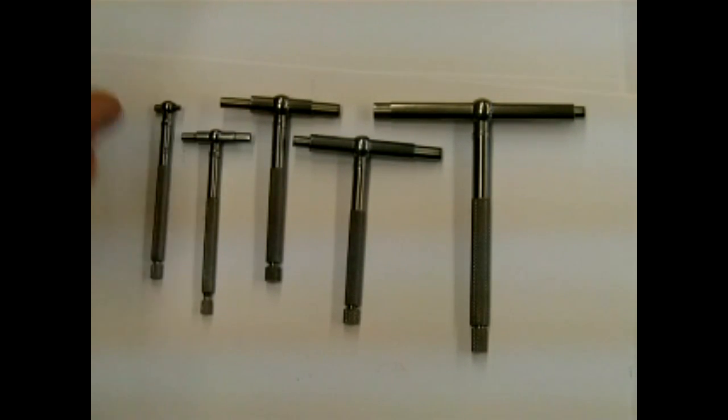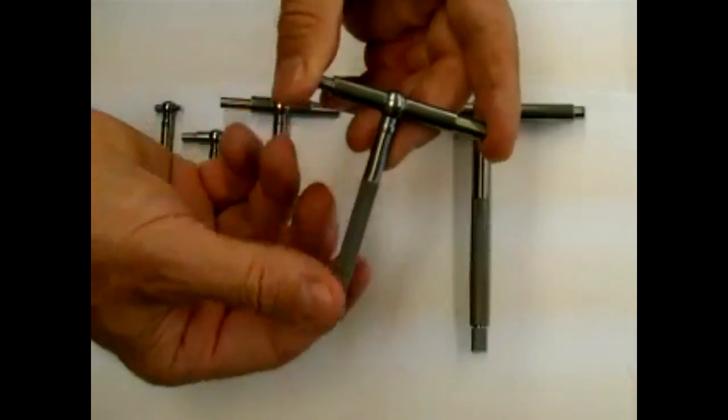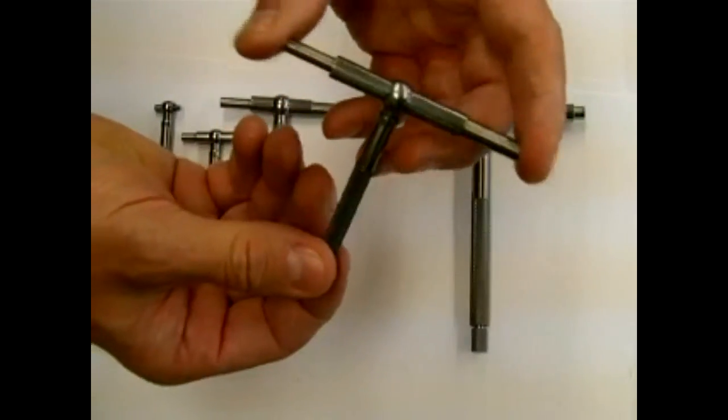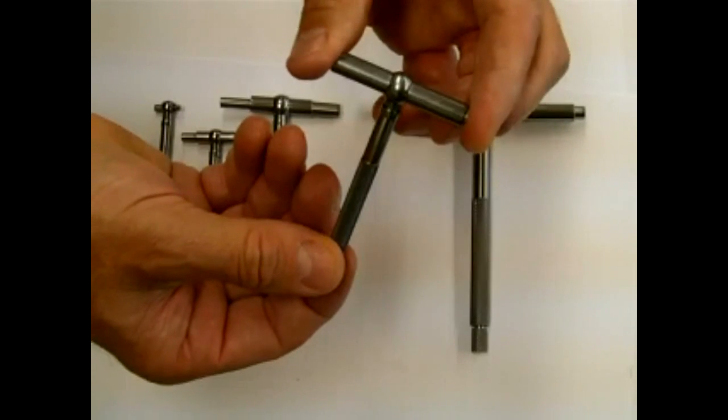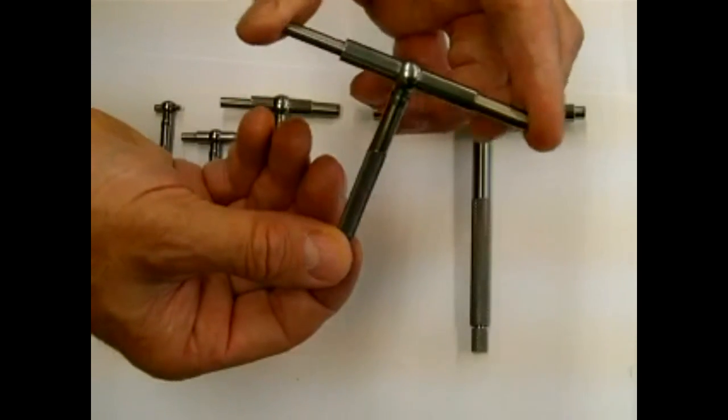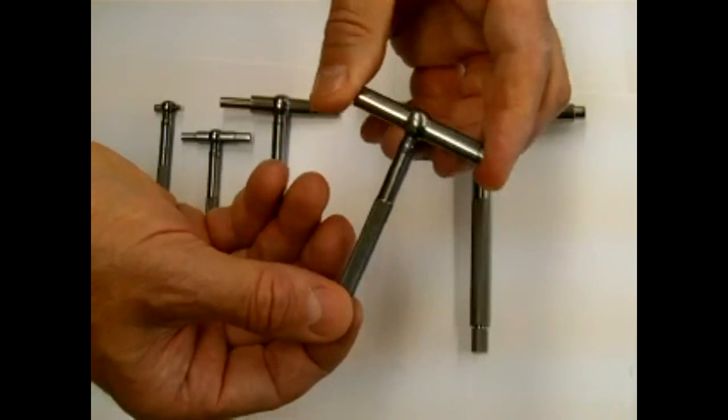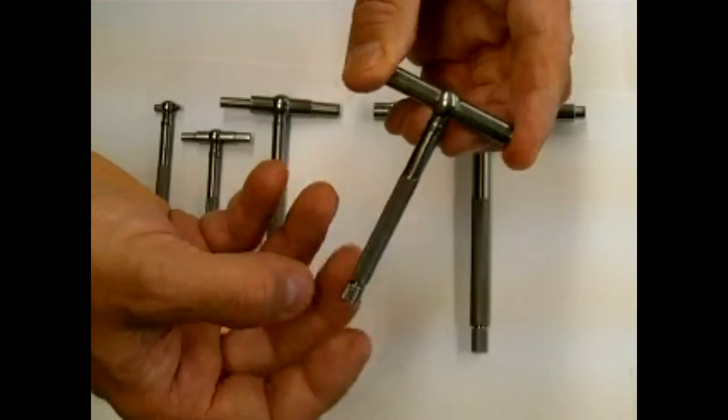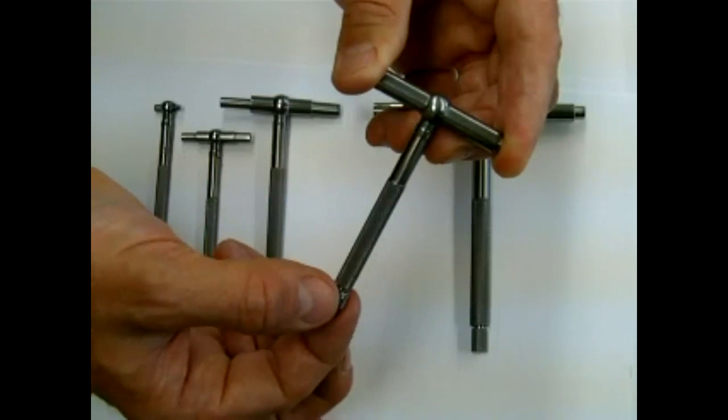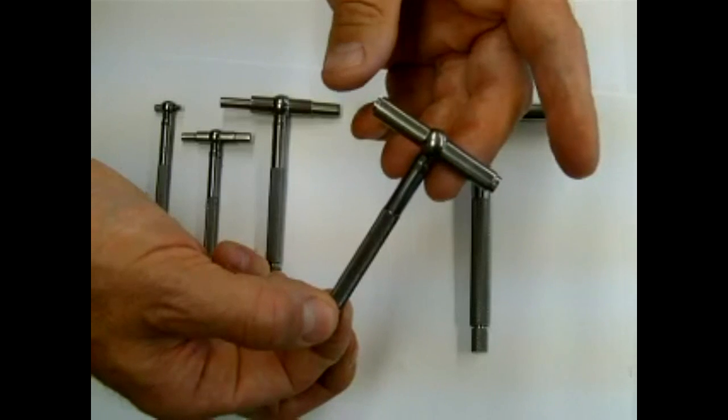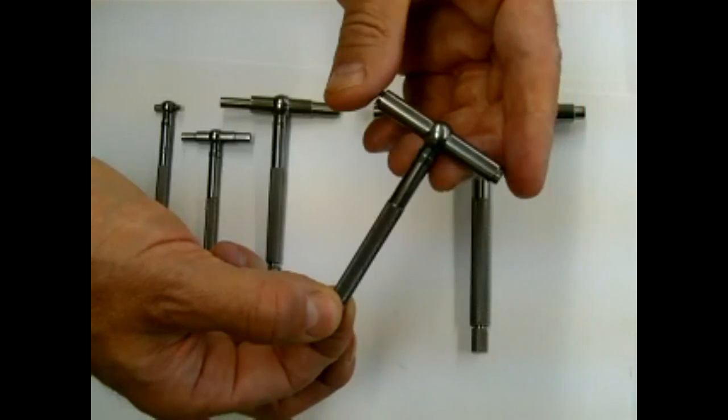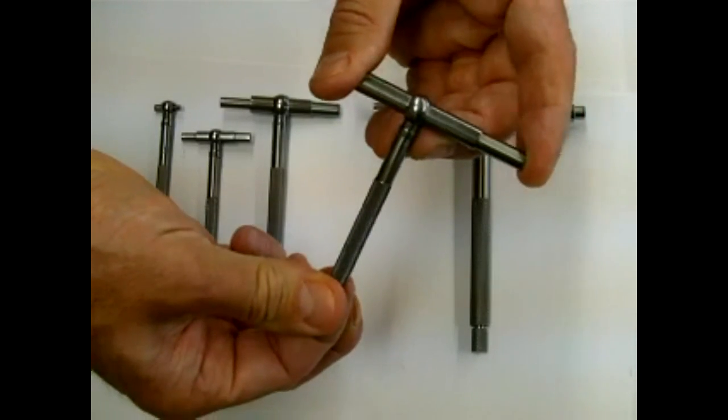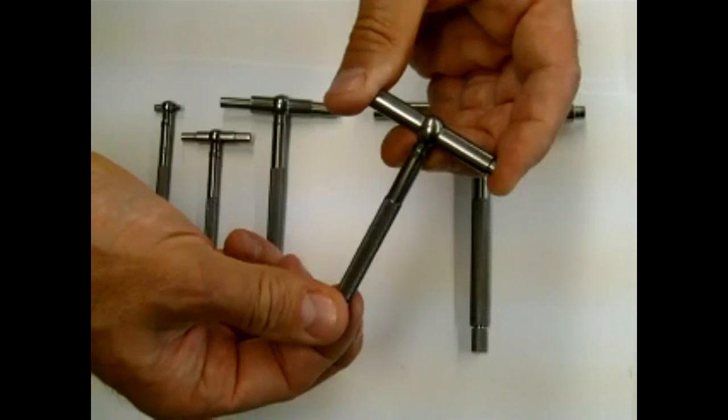How these work is we have two measuring faces that will extend and retract inside the head of this tool. If I turn this screw here I can actually lock these measuring heads in place. If I loosen the screw they will spring open giving me the range.